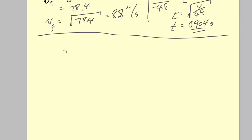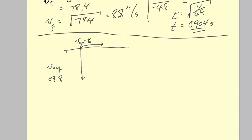When the projectile hits the ground, vertically its velocity is 8.8 m/s and horizontally it's 6 m/s. The resultant of those two components gives us the final velocity vector.